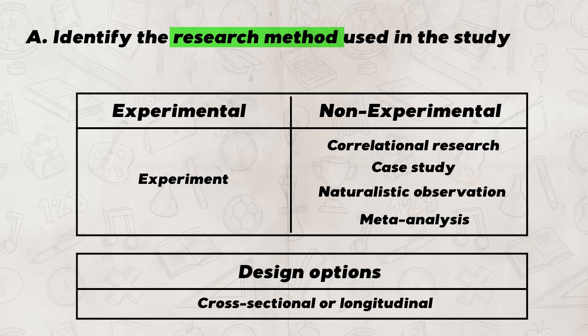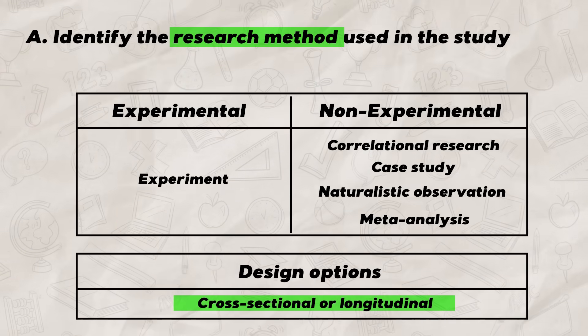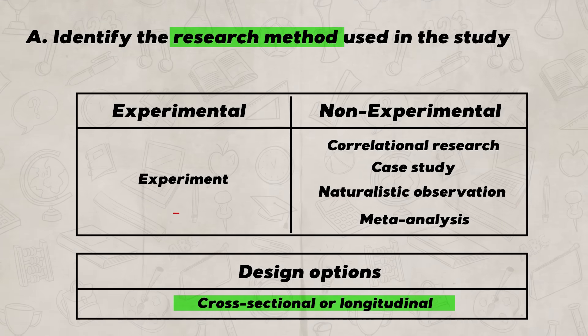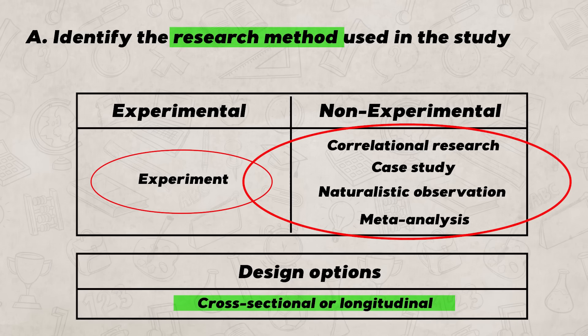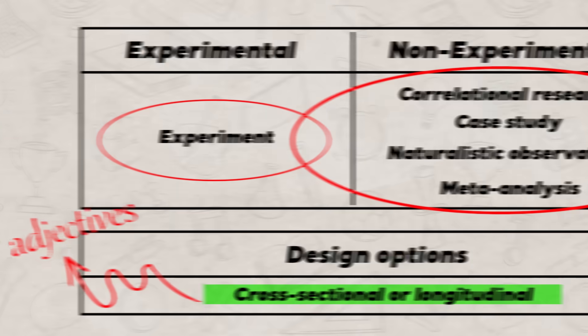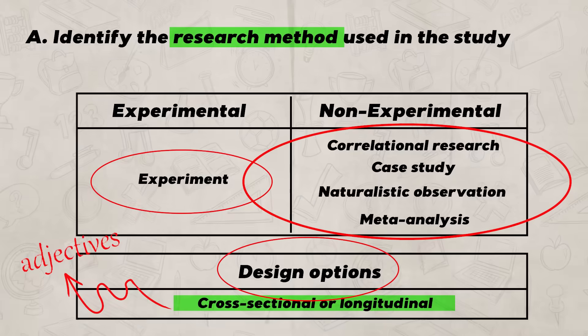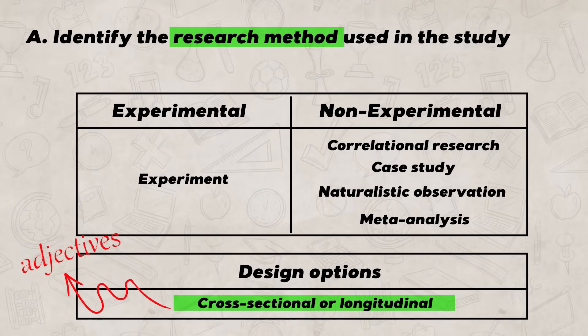Before moving on to Part B, note that if you're going to use longitudinal or cross-sectional as an answer, you also want to connect to one of the experimental or non-experimental options. Think of longitudinal and cross-sectional as adjectives — these are design options for a research method, which narrows the seven possible answers down to really just five. College Board has said that AAQs will focus on just one research method, so you don't need to worry about a trick question that uses mixed methods.